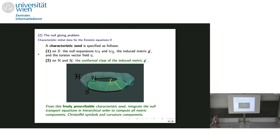On the sphere, you prescribe the outgoing and ingoing null expansion, the induced metric, and a vector field. On H and H-bar, you prescribe the conformal class of the induced metric on those spheres. From this freely prescribable characteristic seed, you integrate the null transport equations in hierarchical order, one after the other, computing all metric components, Christoffel symbols, and null curvature components — it is truly algorithmic. You start with the characteristic seed, integrate for the metric, then the next null transport equation uses the seed and the metric to get the Ricci coefficient, and the next uses the Ricci coefficient, the metric, and the seed to get the null curvature component.